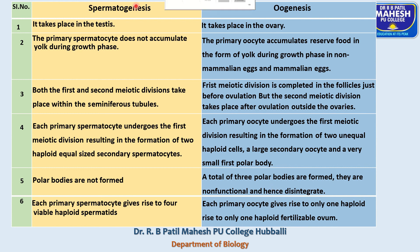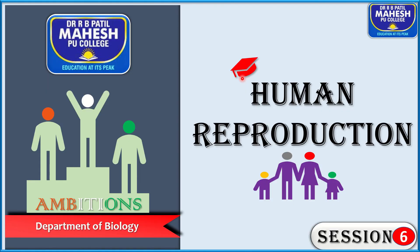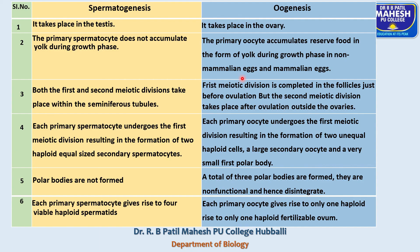These are the differences between spermatogenesis and oogenesis. This completes the process of gametogenesis. In the next session, we will discuss the menstrual cycle. Thank you.